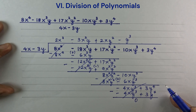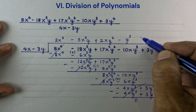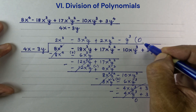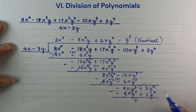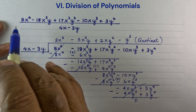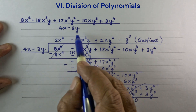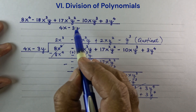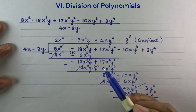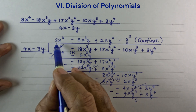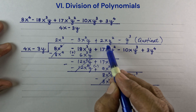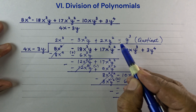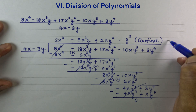And that's zero. The remainder is zero, therefore this polynomial is exactly divisible by this binomial divisor 4x minus 3y. So our quotient is 2x cubed minus 3x squared y plus 2xy squared minus y cubed. And that's the answer.